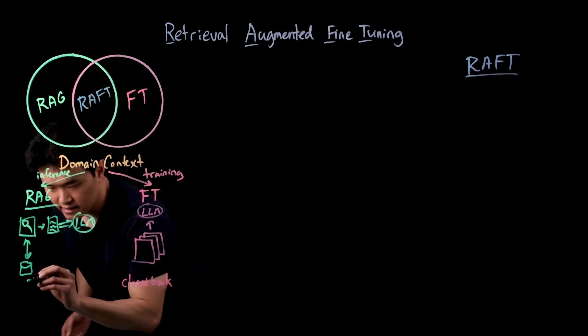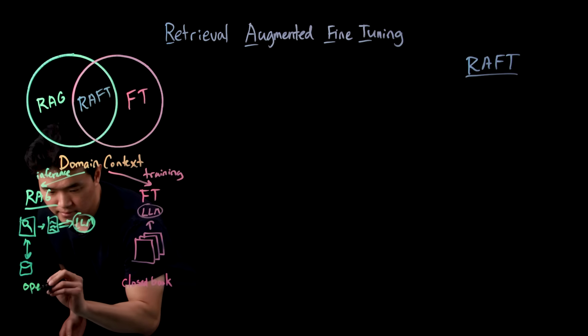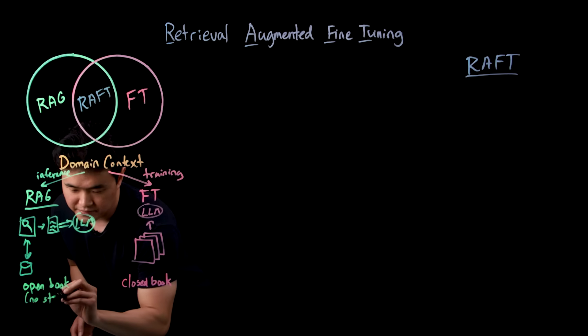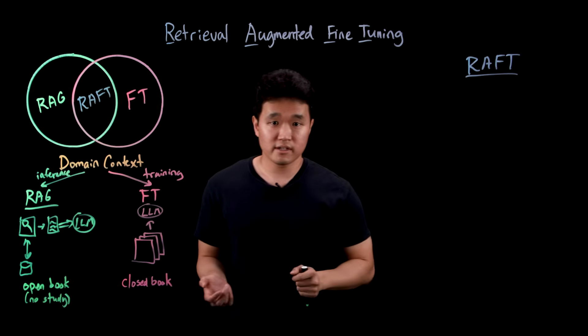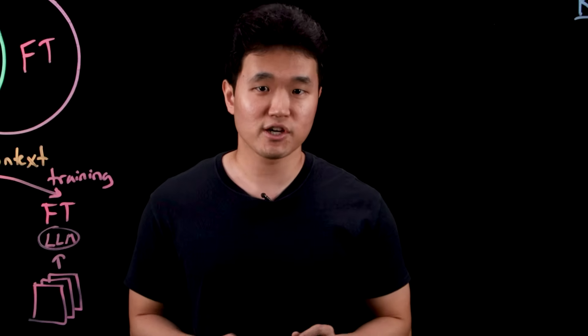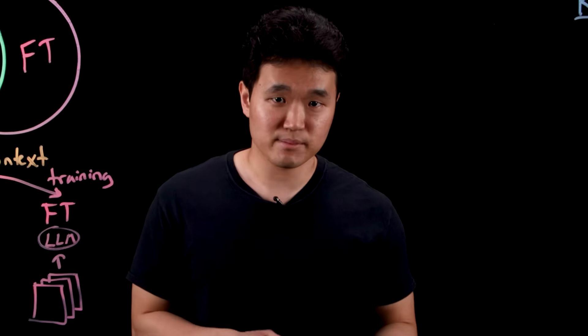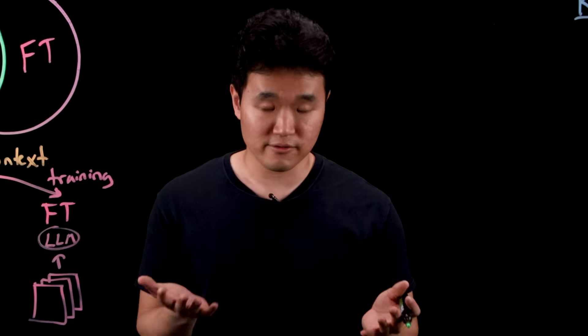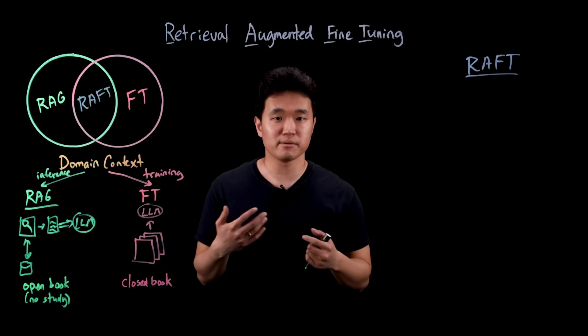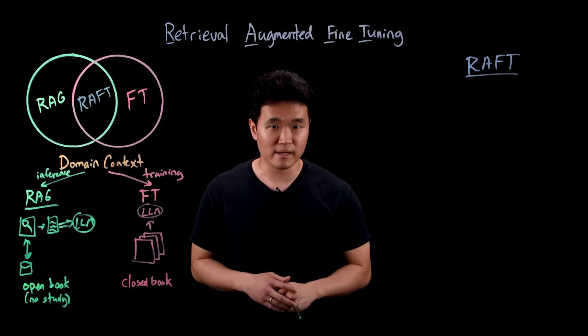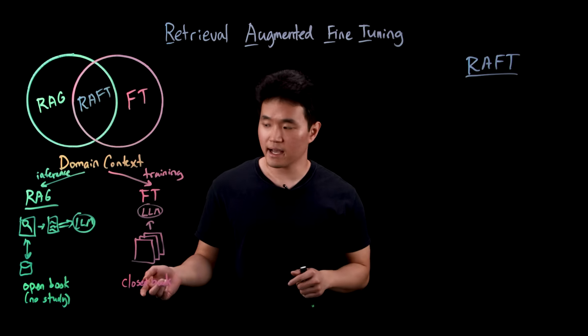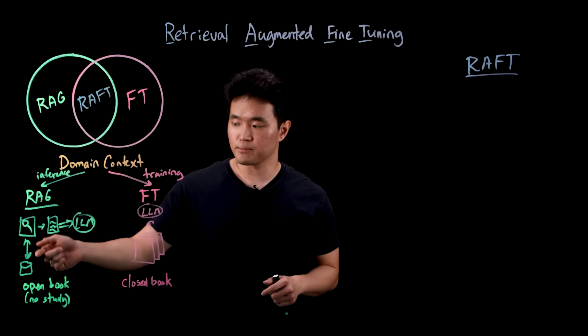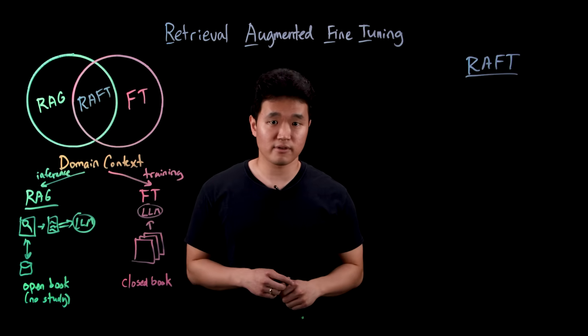Now RAG would be like taking an open book exam that you did not study for. Because you knew you could use the book on exam day, you chose to skip all the lectures and not read the textbook. So on test day, even though you have all the materials in front of you, there's still no guarantee that you'll actually be able to know where to find all the information. In the same way with RAG, the performance of the model is largely dictated by how well the retriever can pull relevant documents from the database.